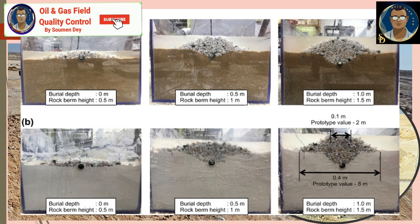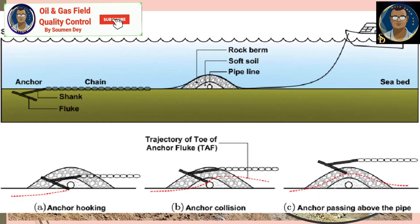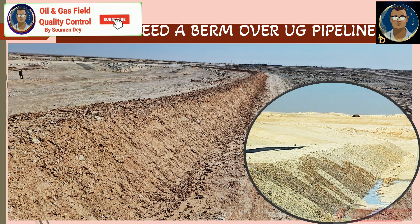Protection from environmental forces: berms can protect the pipeline from environmental forces like wave action, especially in marine environments. However, for countries like the Gulf where sand dunes and desert terrain exist, the main purpose of the berm is to keep the pipeline cool and protect it from external damage.